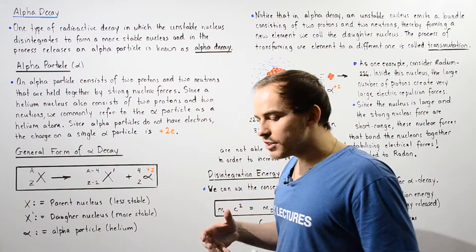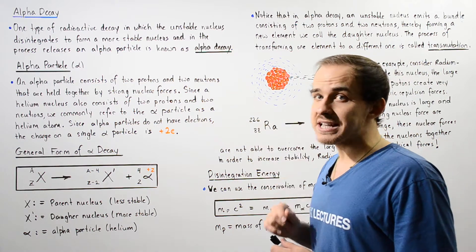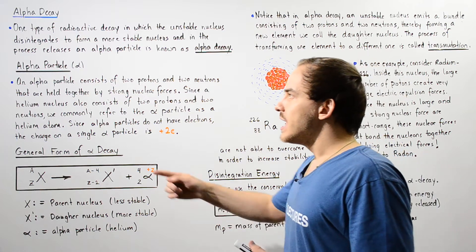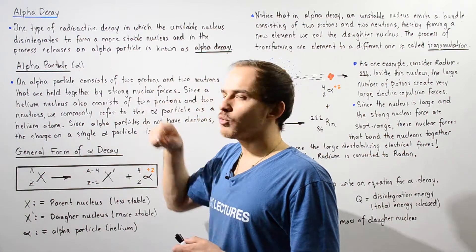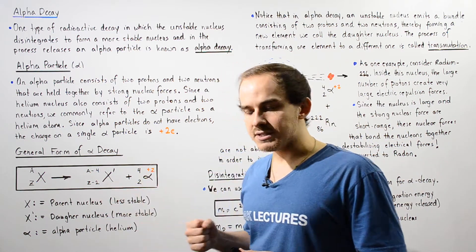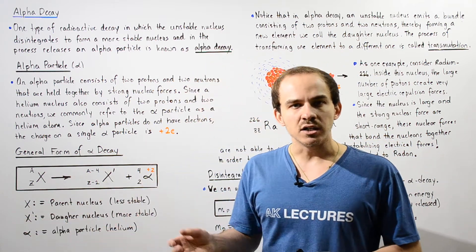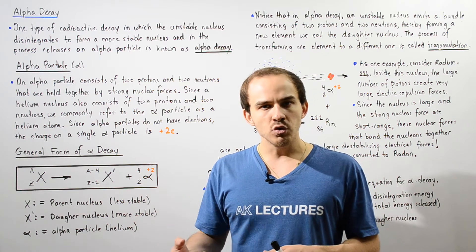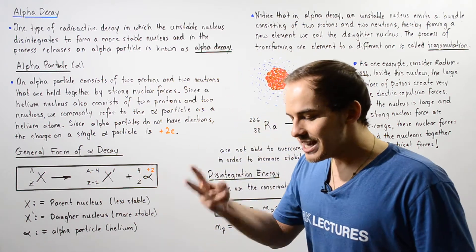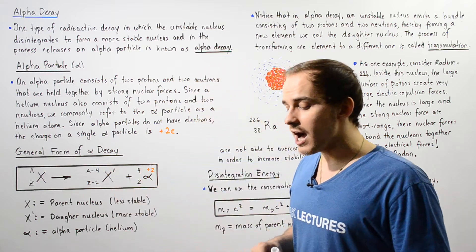Before we examine the general form of the equation that describes alpha decay, let's define what an alpha particle is. An alpha particle is given by the Greek letter alpha. Basically, the unstable nucleus disintegrates and releases a bundle of four nucleons held together by strong and weak nuclear forces — two of these nucleons are protons and two are neutrons.